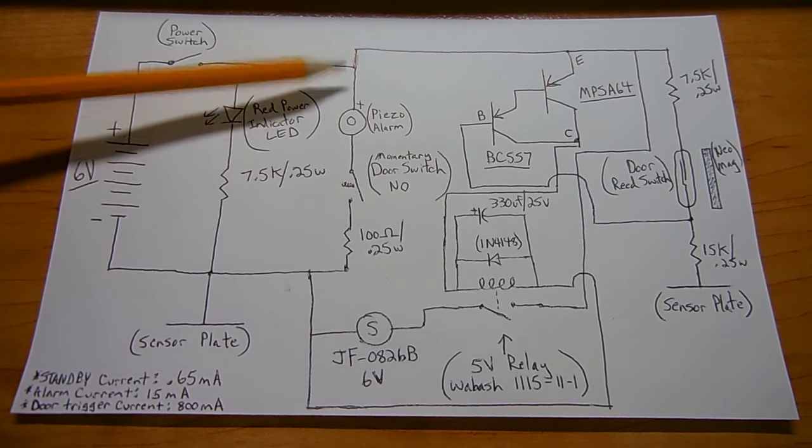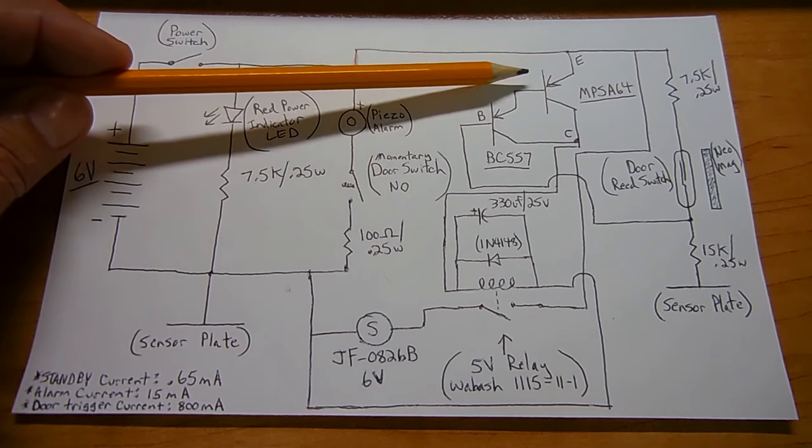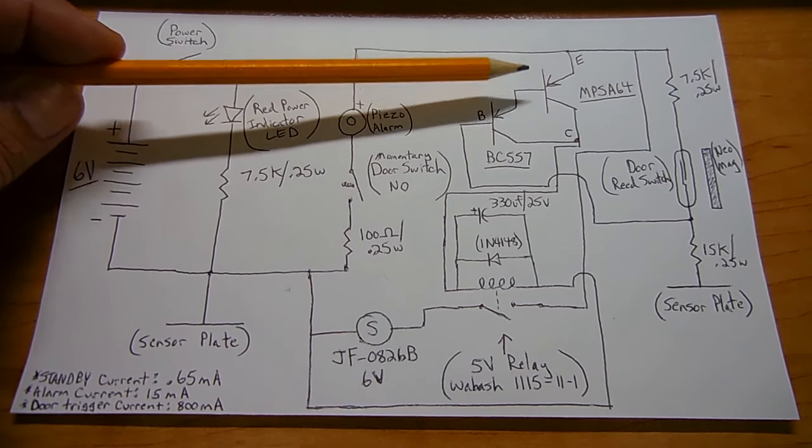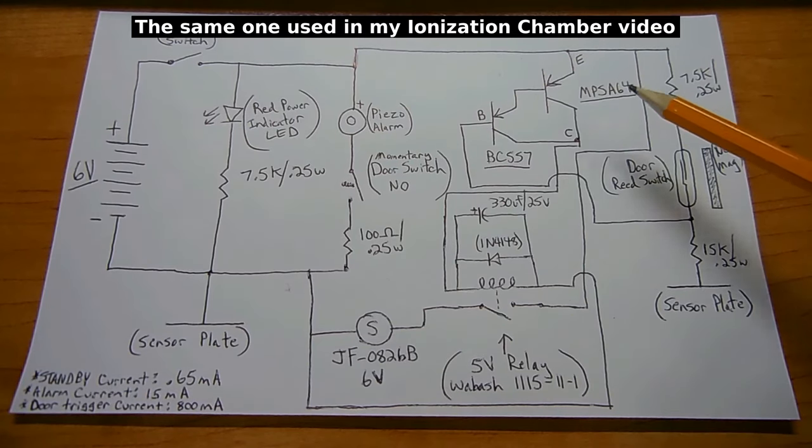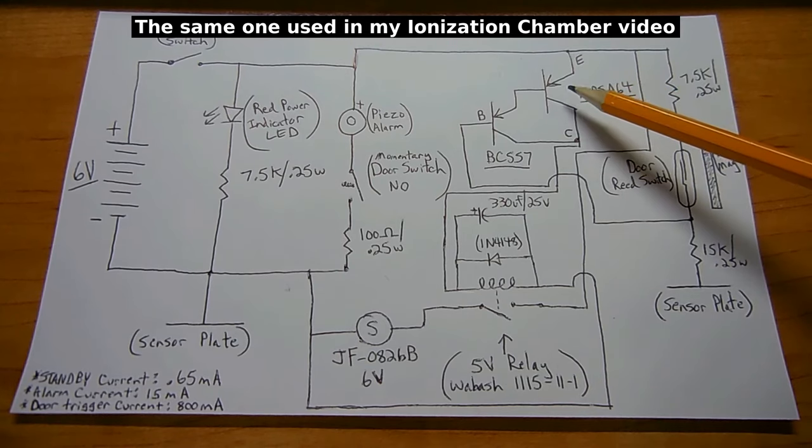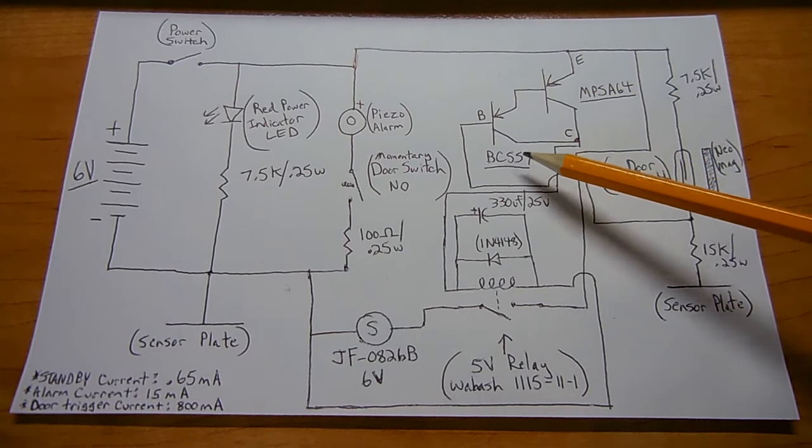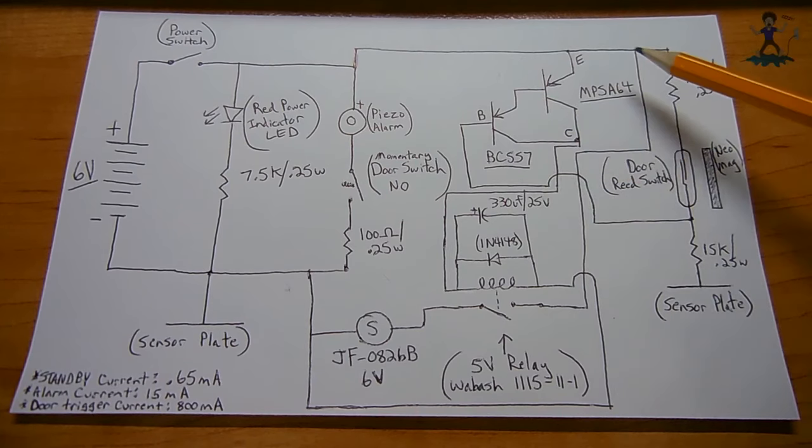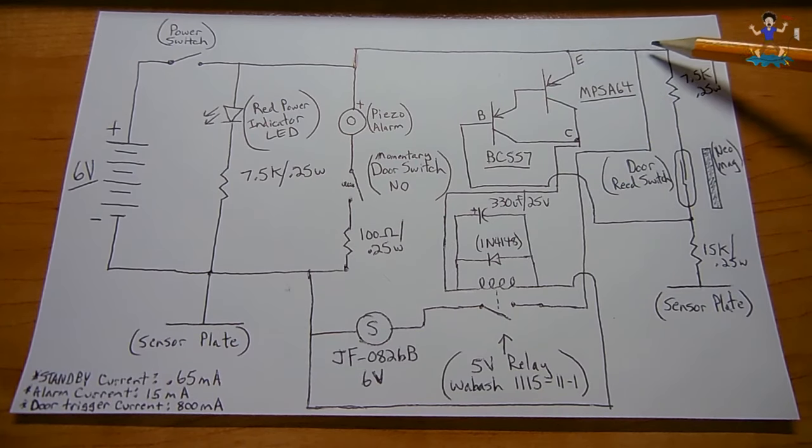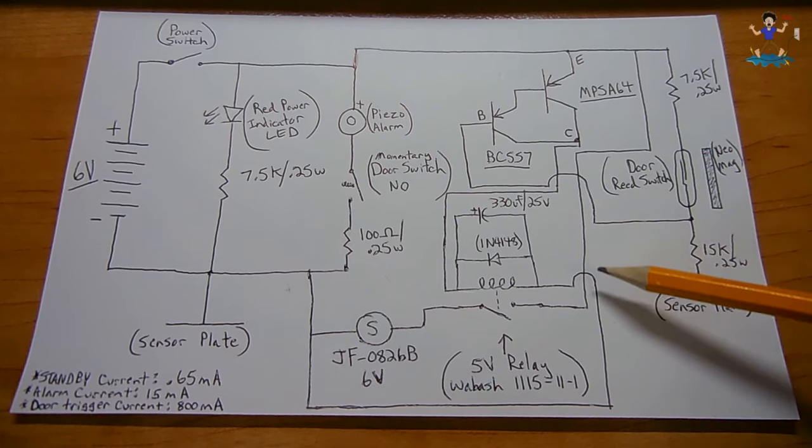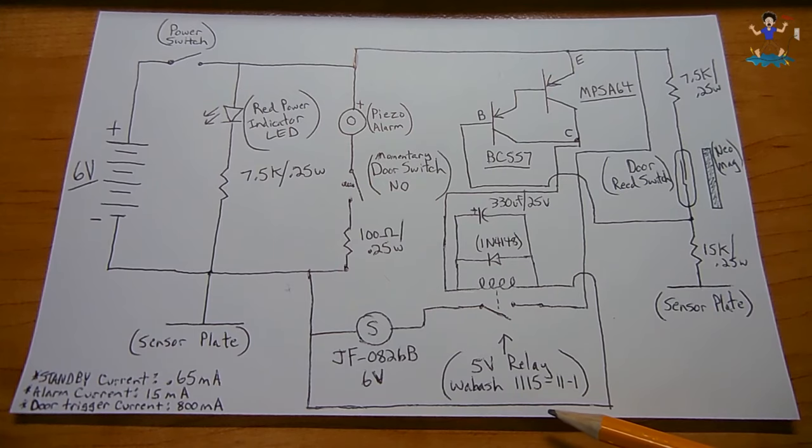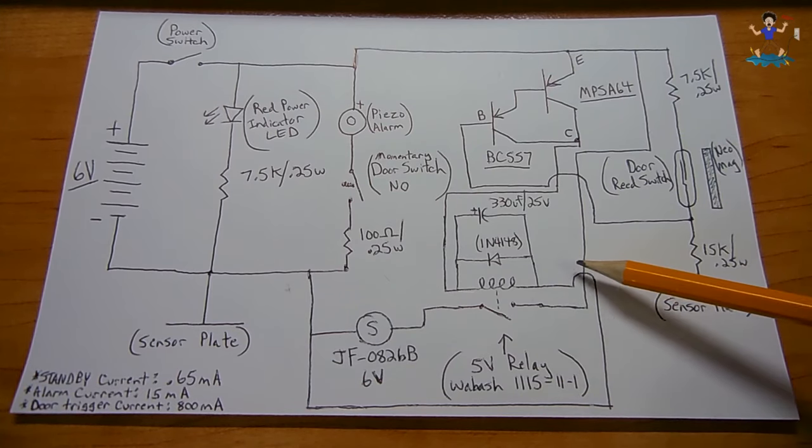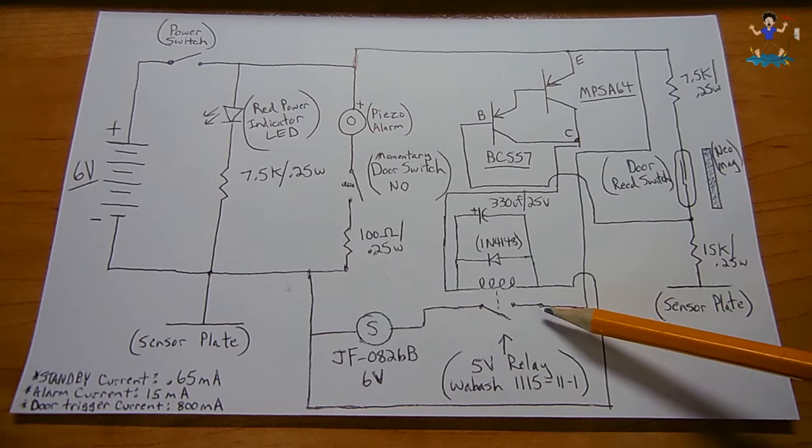Now, if you go to the positive rail over here, it goes all the way over to this transistor, which is an MPSA64. That's a very high gain PNP transistor. And to further increase the gain of this transistor, I connected it in Darlington configuration with a BC557, another PNP. From this point here, the positive rail comes all the way around, and it goes to one side of the 5 volt relay, which is a Wabash 1115-11-1. That goes to the contacts. That's going to be opened and closed. So it's normally open with no current applied.